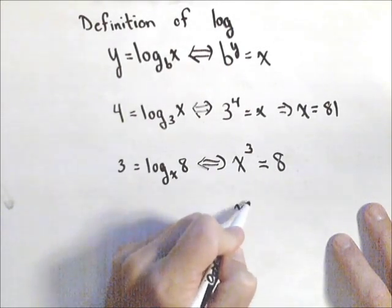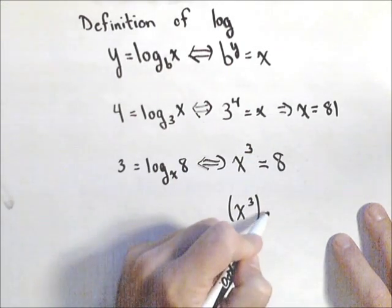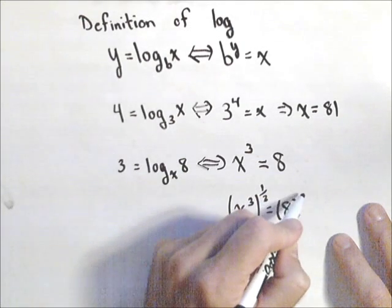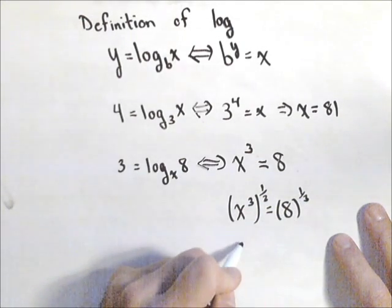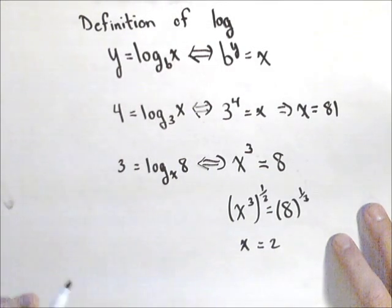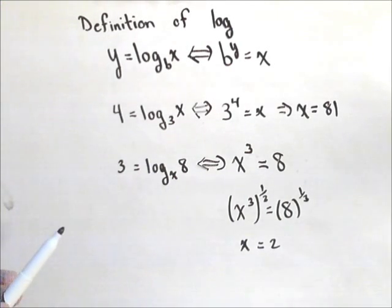But let's just talk about if we had to solve a more difficult one, we could raise both sides to the one-third power and what we'd get is x equals 2. So if you got something that didn't happen to be a nice cube root, we could write it as cube root of 8 or whatever our number would be.